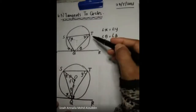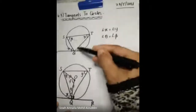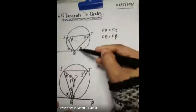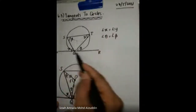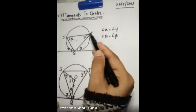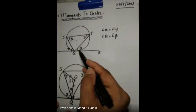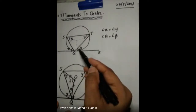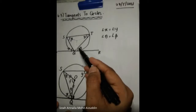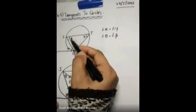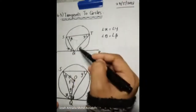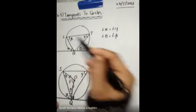The angle between the chord and the tangent line — this angle — is equal to the angle at the alternate segment suspended by the chord, which means this angle. Angle theta equals angle theta.